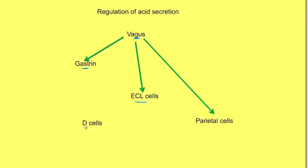Now D cells release somatostatin which have an inhibitory effect on these. So since the effect of vagus is to stimulate HCl secretion, vagus actually inhibits these D cells.